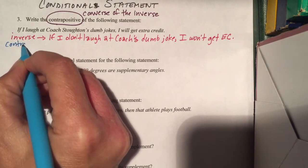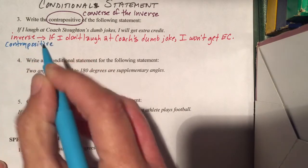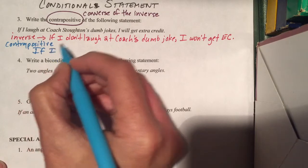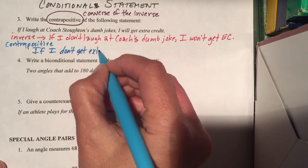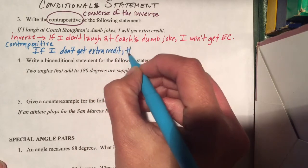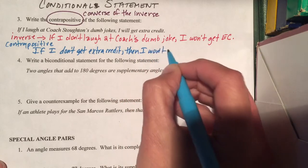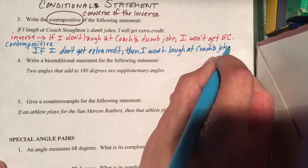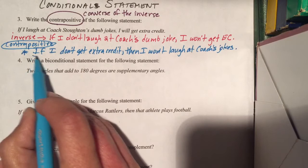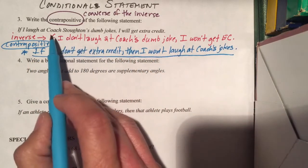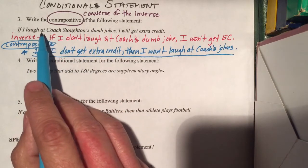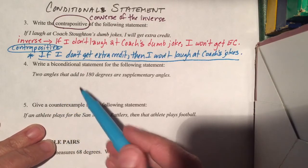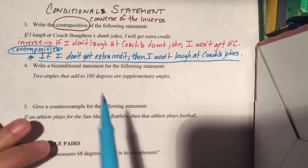I'm going to find the contrapositive by finding the converse of the inverse. I already have the inverse; now I need the converse of it. So the converse of this is: if I don't get extra credit, then I won't laugh at Coach's jokes. That is your contrapositive — flip and make negative. You can also do the converse first and then inverse the converse; either way works.